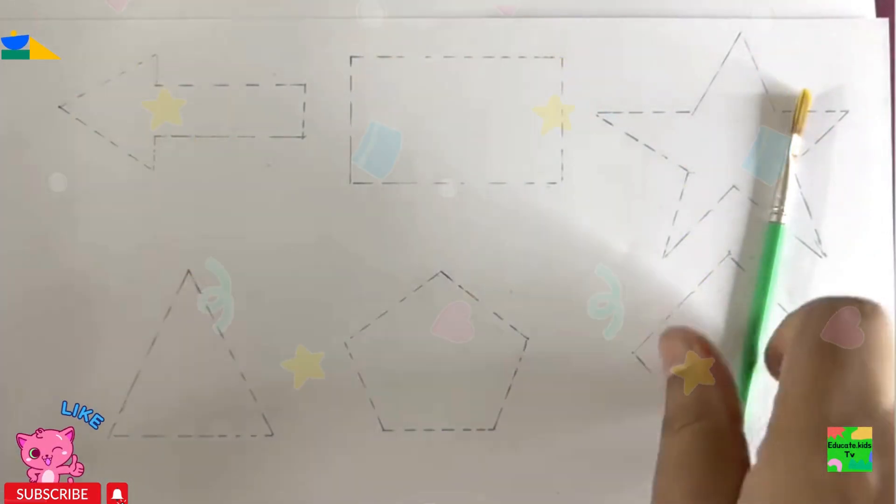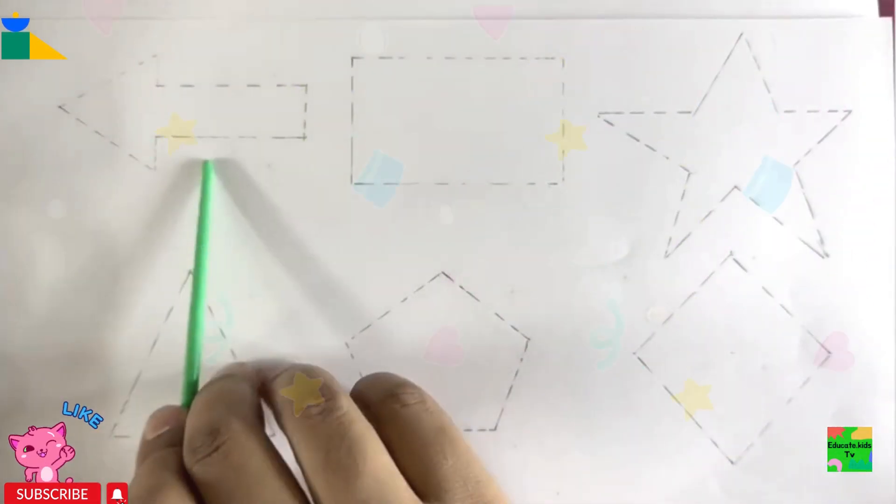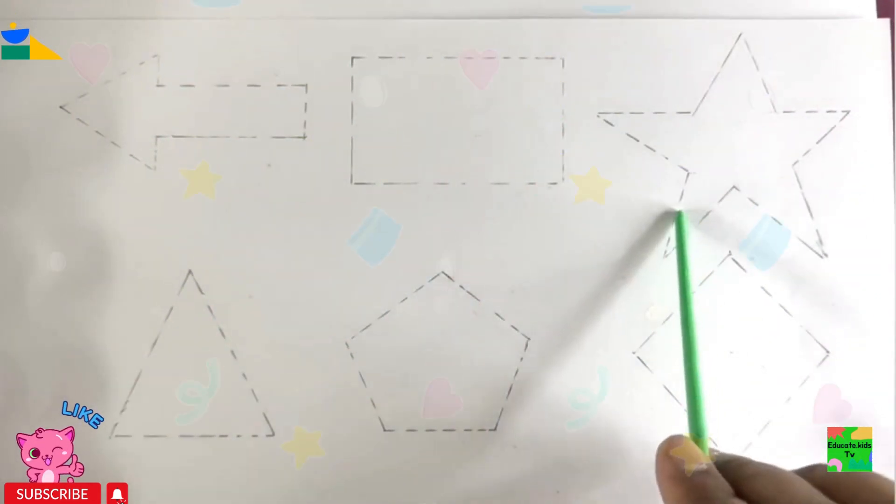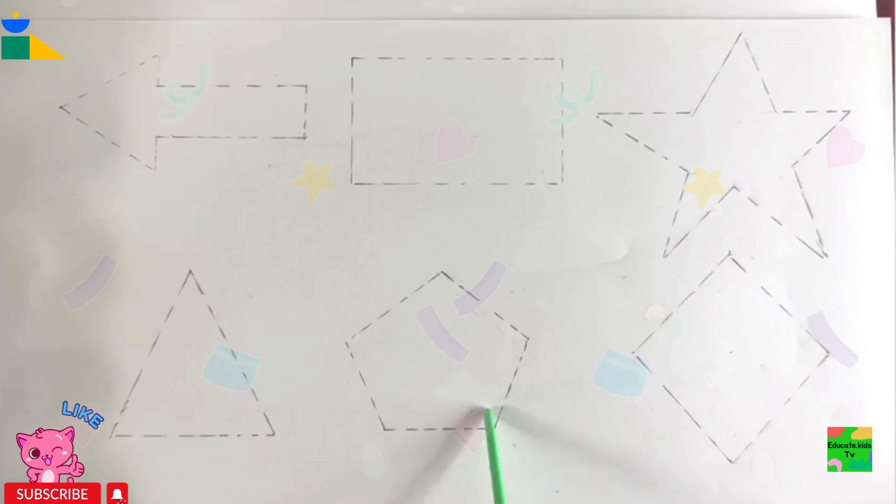Here we have some shapes. Let's learn them. Arrow, rectangle, star, triangle, pentagon, and rhombus. Hooray!